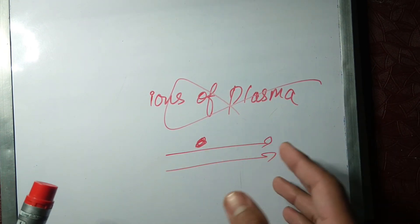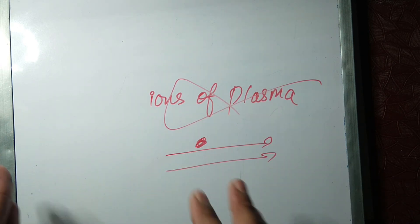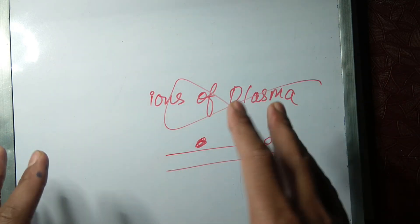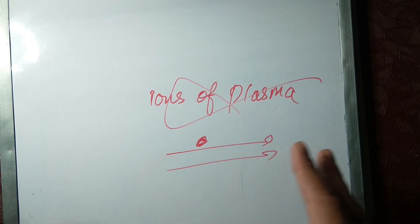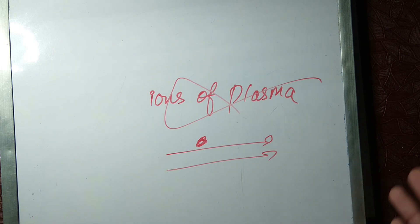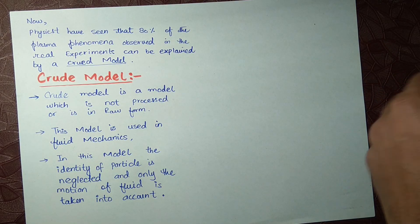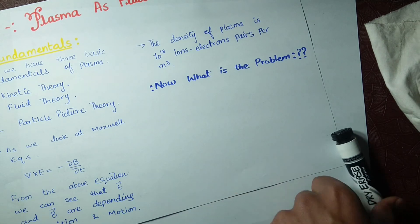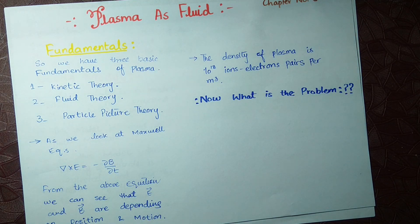Because of this crude model, we can find the equation of fluid plasma and many other things, which will make the model clearer. In summary, this is a general model where we only discuss the effects — we don't examine each particle in detail, we discuss the collective effects. Our introductory lecture is over. In the next lecture, we are going to talk about the equation of continuity for plasma as a fluid. Thank you very much. Assalamualaikum, and until then, see you next time.